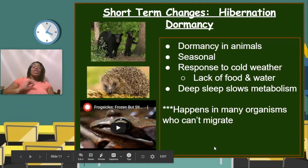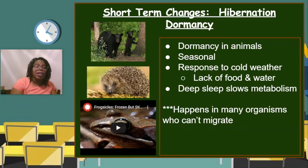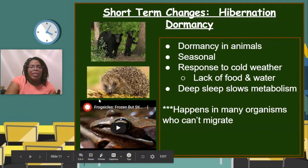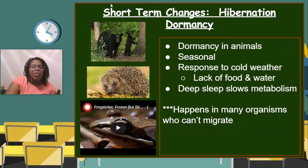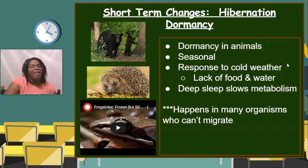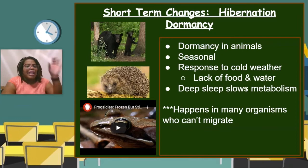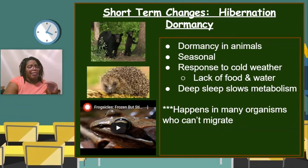Animals can also undergo dormancy, and when animals do, we call it hibernation. You learned about this in elementary school — bears and hedgehogs are animals that hibernate in Virginia, and there are lots of others. It is usually seasonal, lasting through the winter when it's really cold and there isn't enough food and water for them to carry on their normal lives. To prevent dying, they go into a very deep sleep that slows their metabolism almost to a complete stop, reducing respiration, excretion, and all their other processes.